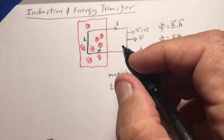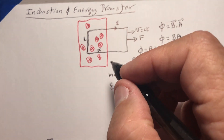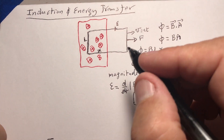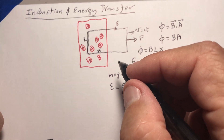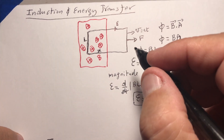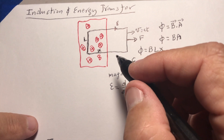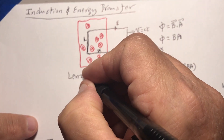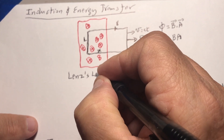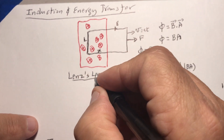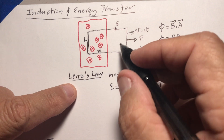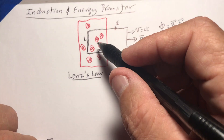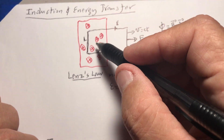When I pull the wire, a current is generated in the loop. Now we need to know the direction of this current. To find the direction, we use Lenz's law — please pay attention because this requires understanding.